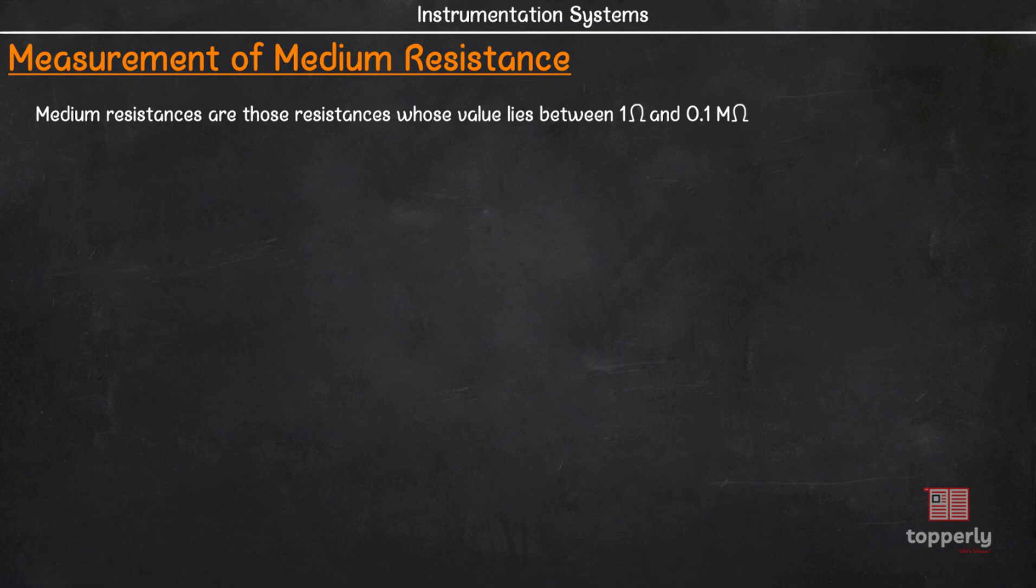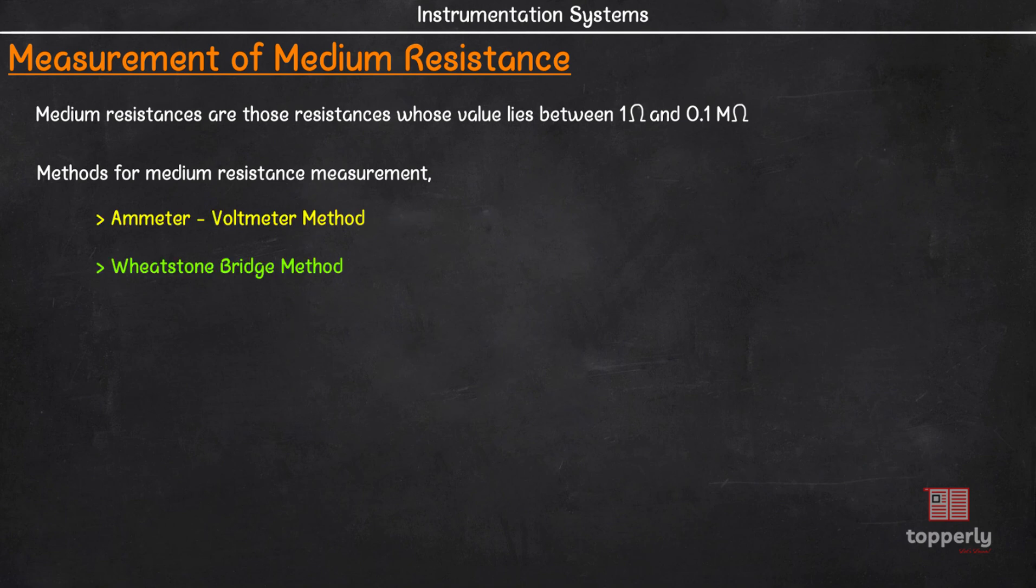Now, there are mainly 5 methods used for measurement of medium resistances. The first one is Ammeter-Voltmeter method. Then there is Wheatstone Bridge method, Substitution method, Ohmmeter method and finally Carey-Foster method. Of this, we have already discussed about Ammeter-Voltmeter method and Wheatstone Bridge method while we were studying about low resistance measurement. So, I suggest you to check out those two lectures to study about these two methods. Also, the links to these videos are given in the description below.